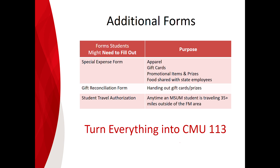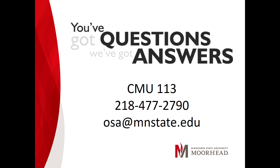Once they are turned in, we will review everything, make sure it's complete, and do the final signature. Everything then goes over to business services to get the reimbursement checks issued. You will receive an email once your check is ready to be picked up at CMU 113 — bring your Dragon ID so we know we're giving the check to the right person. If you have any questions, contact the Office of Student Activities — we are more than happy to help.